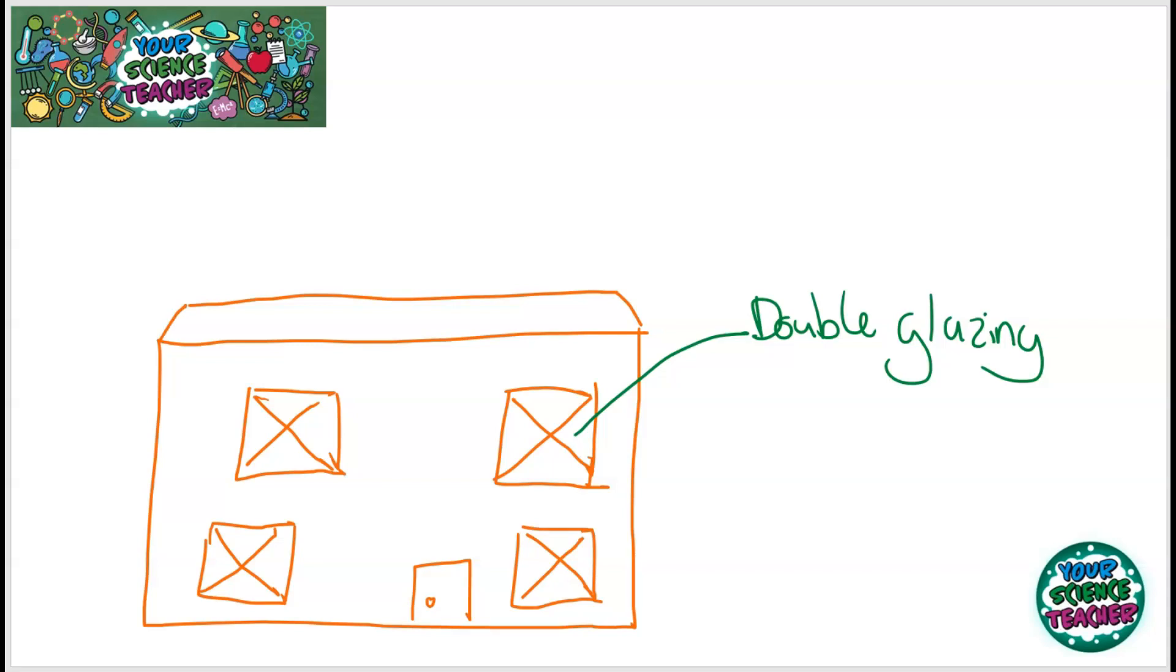Another example of insulation in the home is loft insulation. And loft insulation has air gaps as well. If you look at it, it looks a bit like cotton wool and is spongy because of the fact that it has lots of air gaps.